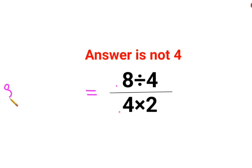Let me write this in a linear format. It is basically 8 divided by 4 in one bracket, then division, and then 4 multiplied by 2 in the other bracket.